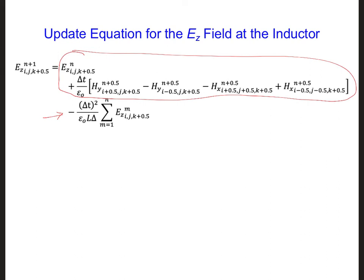Now, remember when we implemented the two-dimensional PML, we also had a summation over all time steps. We should efficiently implement this summation just as we did for the two-dimensional PML, which means we should not save the ez field at all the time steps over the course of the entire simulation, and we should not re-evaluate the entire summation every time step. Instead, implement a running sum, where at every time step you just add on the newly updated ez value to your running sum.